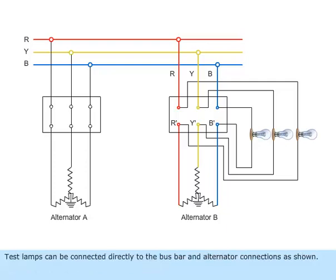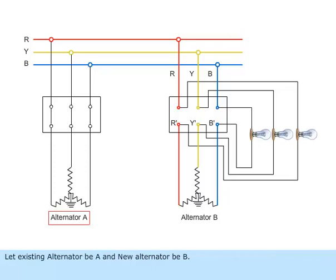Test lamps can be connected directly to the bus bar and alternator connections as shown. Let existing alternator be A and new alternator be B.